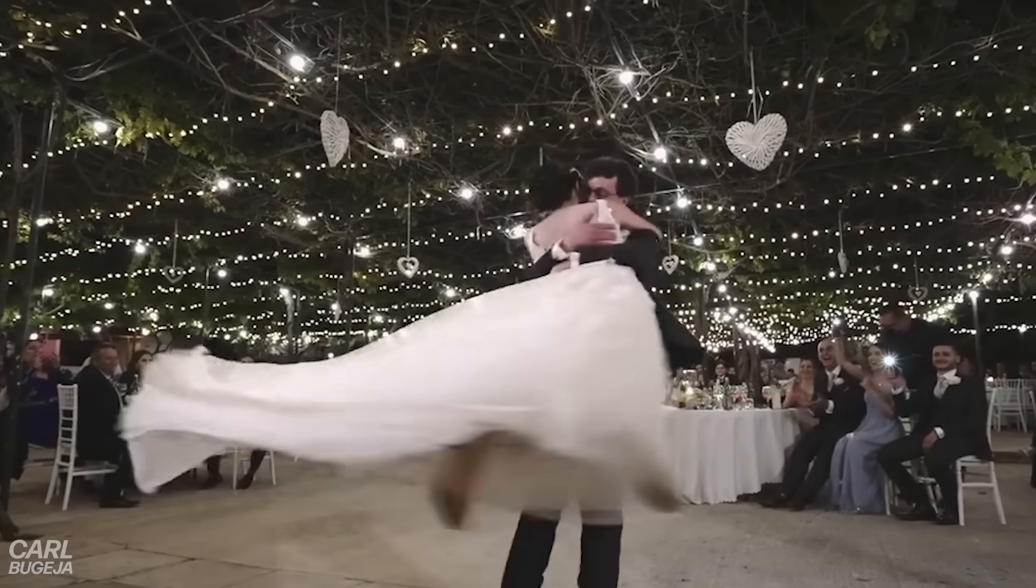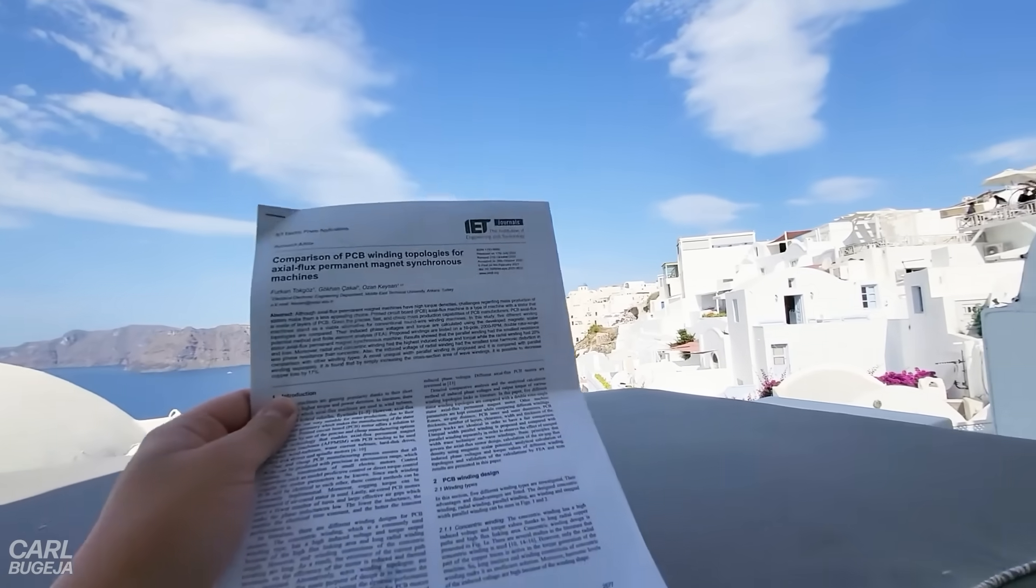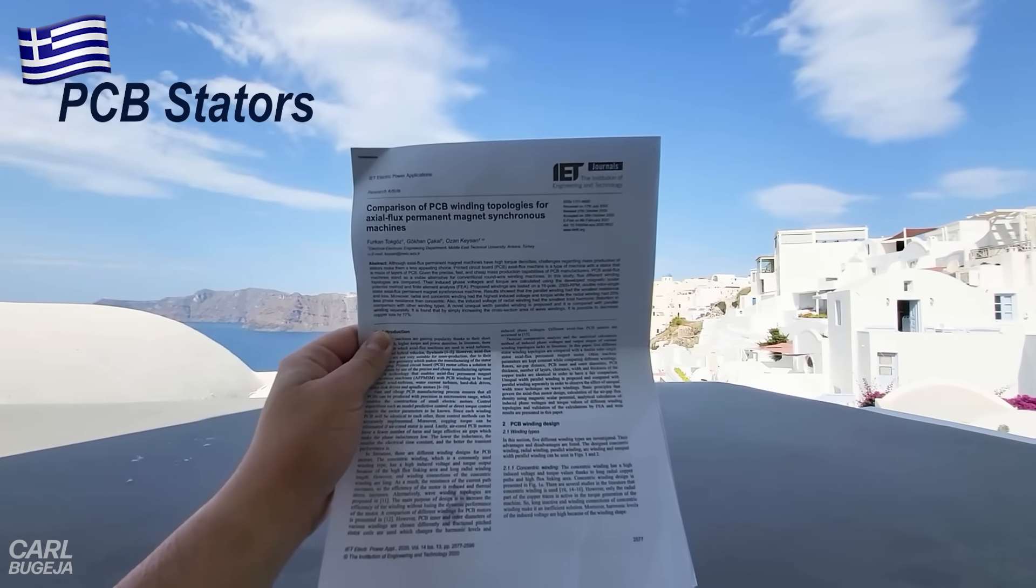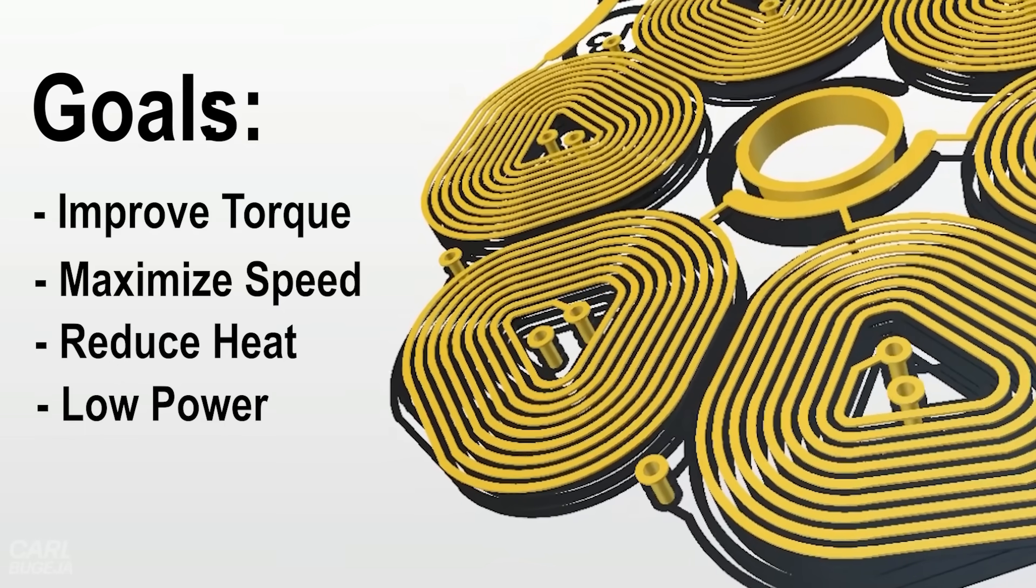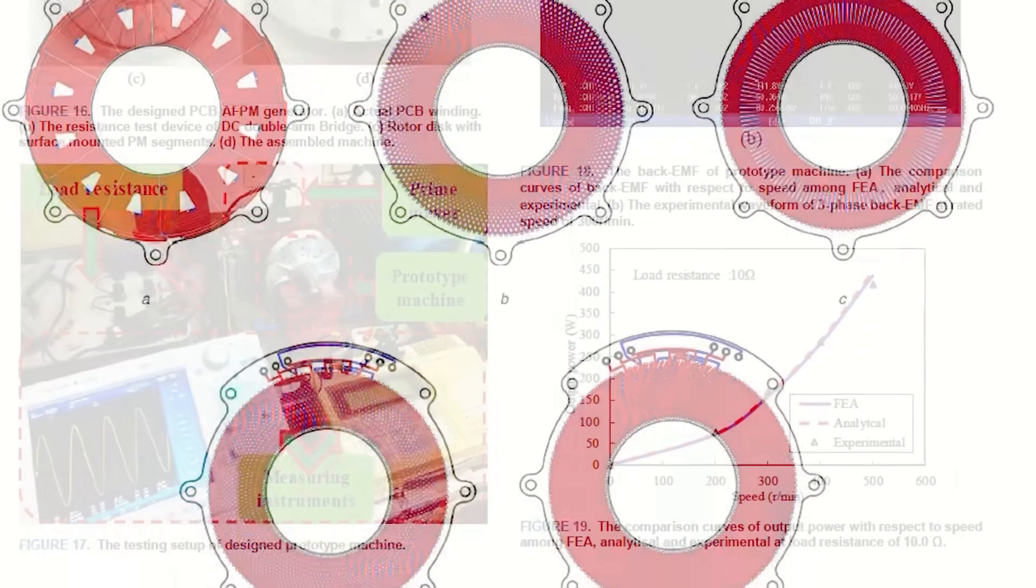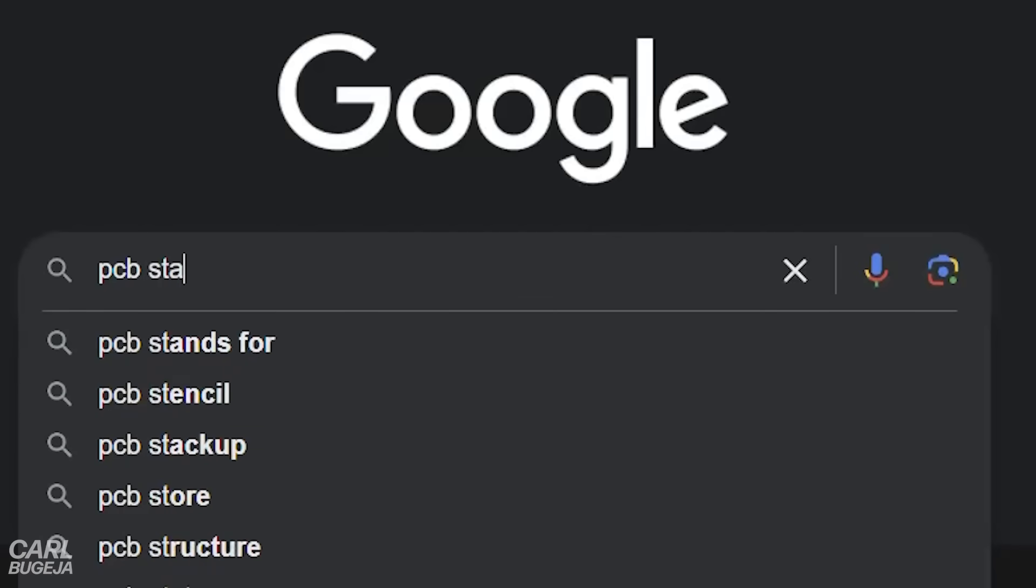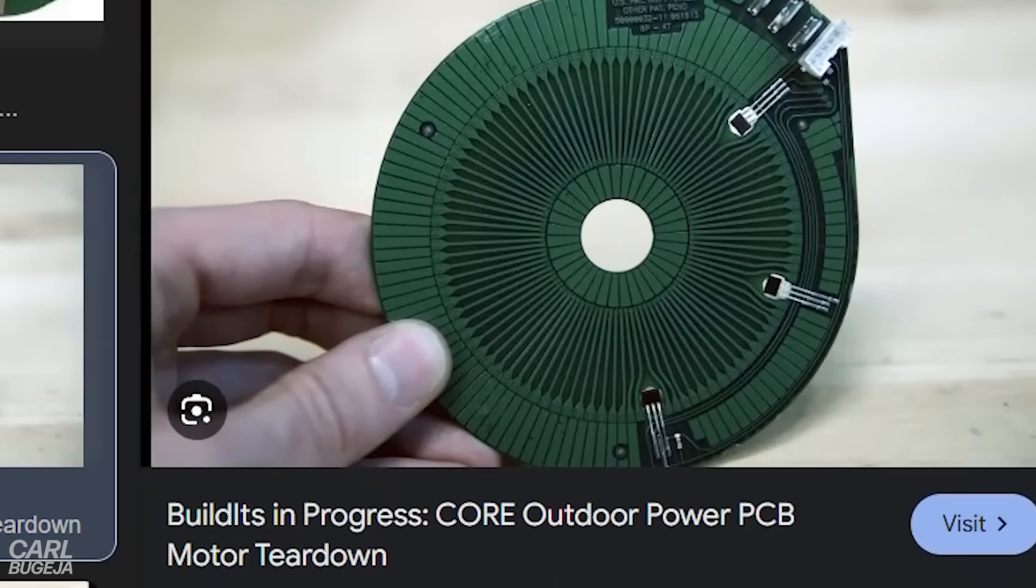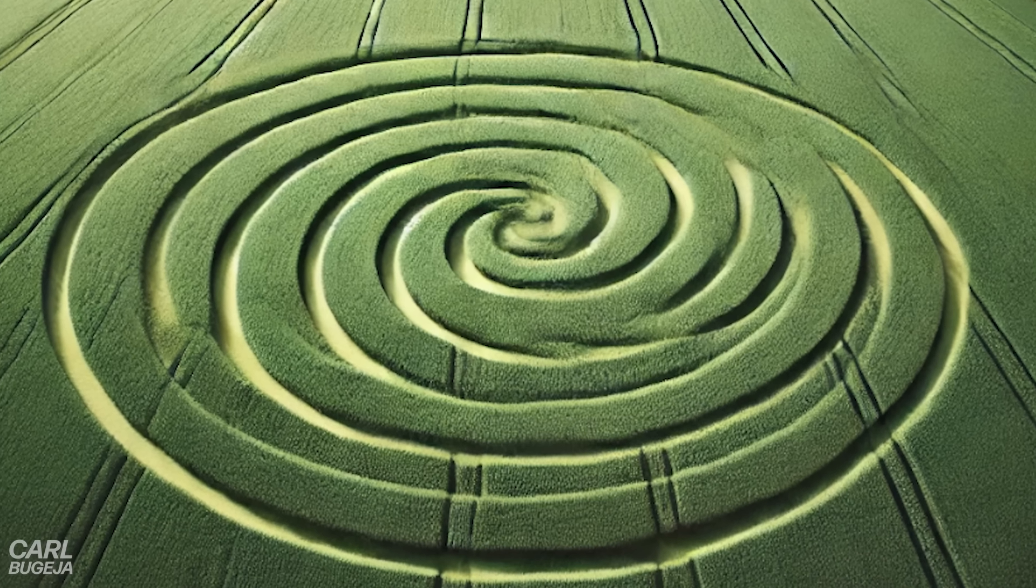You see after marrying the girl of my dreams I decided to study PCB stators on my honeymoon. I wanted to reduce the losses of my winding so I was curious what other people were trying. Especially because when you search for it on Google these linear shaped coils come up. But mine just looked like alien crop circles.